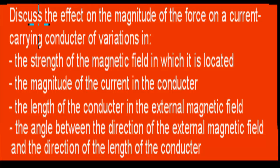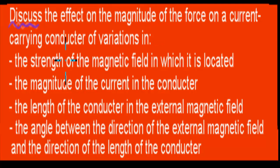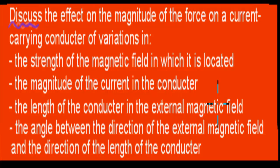I'll read the actual dot point. It says: discuss the effect on the magnitude of the force on a current-carrying conductor of variations in the strength of the magnetic field in which it's located, the magnitude of the current in the conductor, the length of the conductor in the external magnetic field, and the angle between the direction of the external magnetic field and the direction of the length of the conductor.